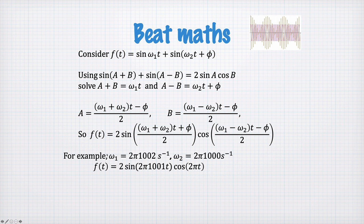Let's now take an example. The example being ω₁ is 2π times 1002 radians per second, ω₂ is 2π times 1000 radians per second. Which means that this frequency here is 1002 Hz, and this frequency here is 1000 Hz. Substituting in to our function f(t), using this equation here, and setting the phase shift to 0, we get a sine wave going at 1001 Hz, multiplying a cosine wave going at only 1 Hz.